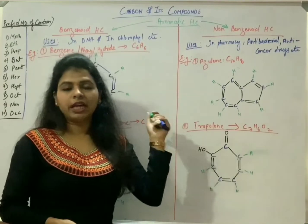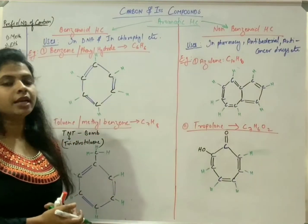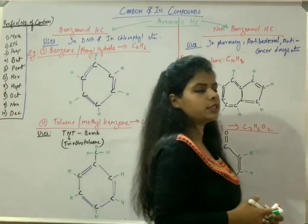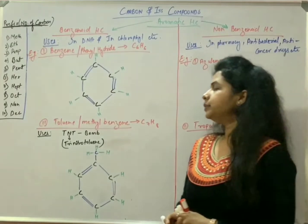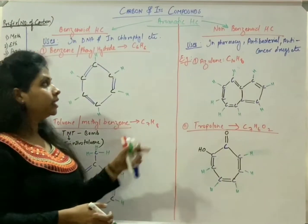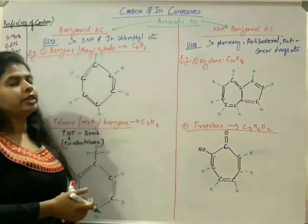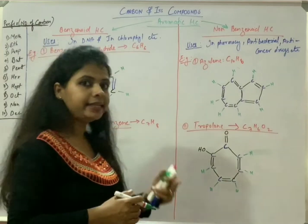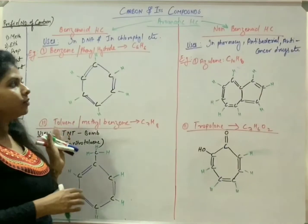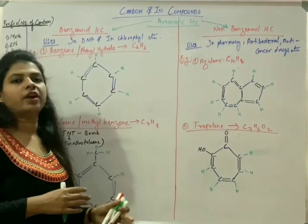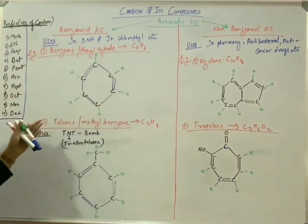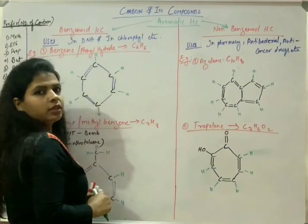Today we learn about aromatic hydrocarbons. Aromatic hydrocarbons are those type of hydrocarbons which have some aroma, some pleasant smell, some distinctive smell. These aromatic hydrocarbons are further classified into two categories: the first one is benzenoid hydrocarbons, and the next one is non-benzenoid hydrocarbons. In benzenoid hydrocarbons, at least one benzene ring structure is required in its chemical structure. In non-benzenoid, a benzene ring structure is not necessary.